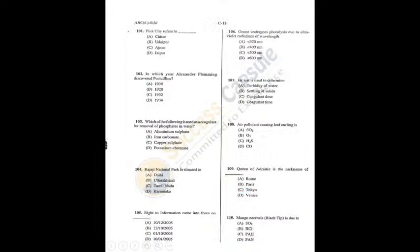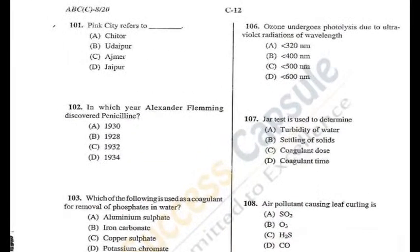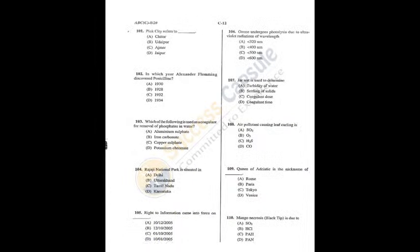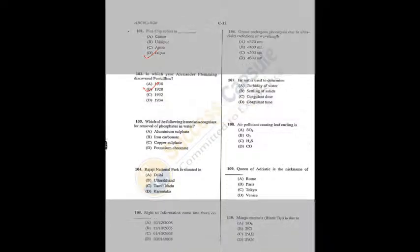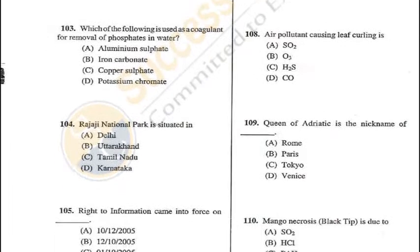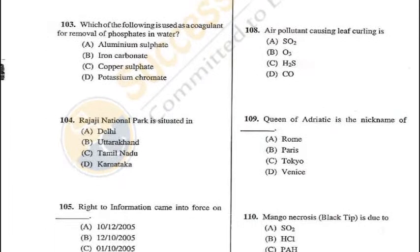Question 101: The Pink City refers to Jaipur — D. Question 102: Alexander Fleming discovered penicillin in 1928 — B is the answer. Question 103: Which coagulant is used for removal of phosphorus in water? Copper sulfate — C is the correct answer. Question 104: Rajaji National Park is situated in Uttarakhand — B is the answer.